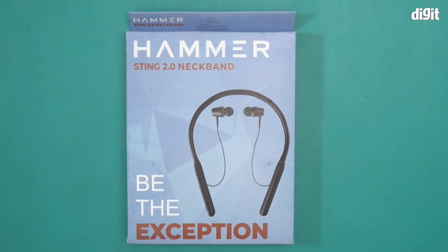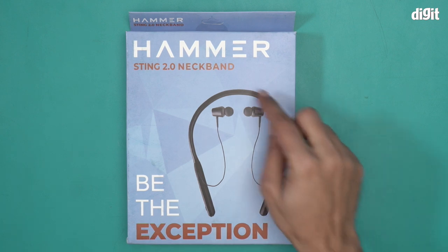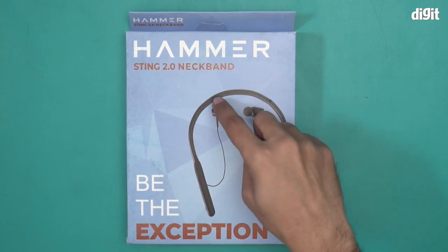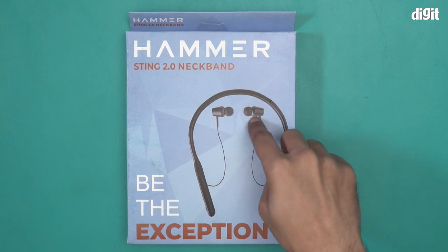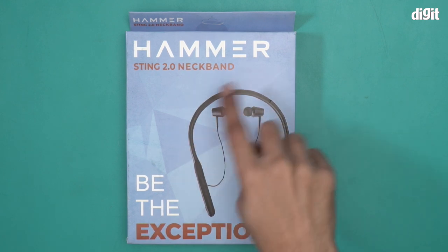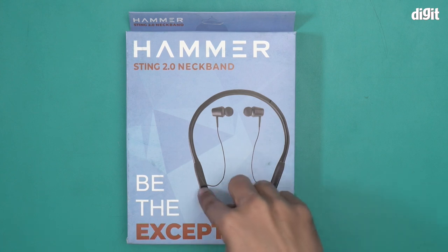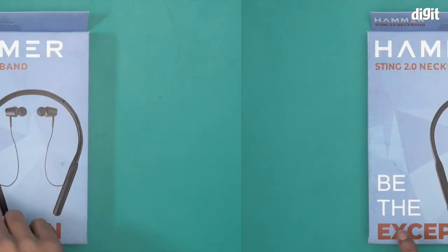Hello and welcome to the unboxing of the Hammer Sting 2.0 neckband. This is a neckband style headset as you can see from the image. It comes with this pretty thick neckband right over here, and these are the two earbuds that come attached with the entire neckband. These are the two modules; one will have the inline controls.